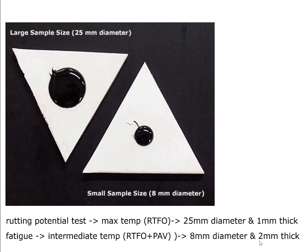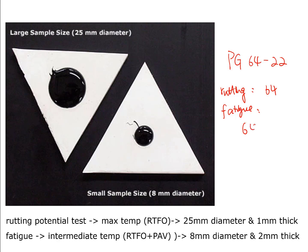For example, if we have a binder which is PG 64-22, and we want to evaluate its rutting potential, the experiment should be performed at the maximum temperature, which is 64 degrees Celsius. If we want to evaluate the fatigue potential, it should be performed at the intermediate temperature, which is the average of the maximum and minimum temperatures plus 4 degrees Celsius. So it should be (64 minus 22) divided by 2 plus 4, which equals 21 plus 4, giving 25 degrees Celsius.